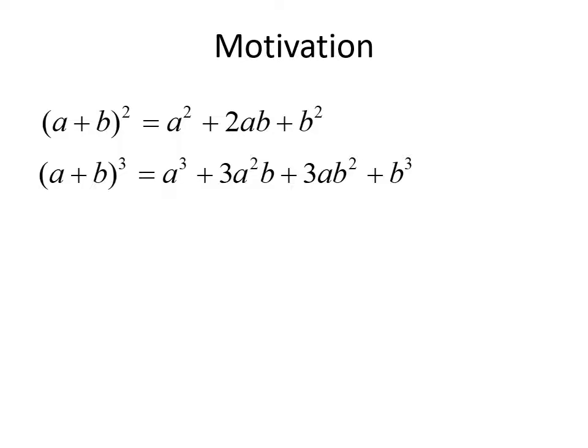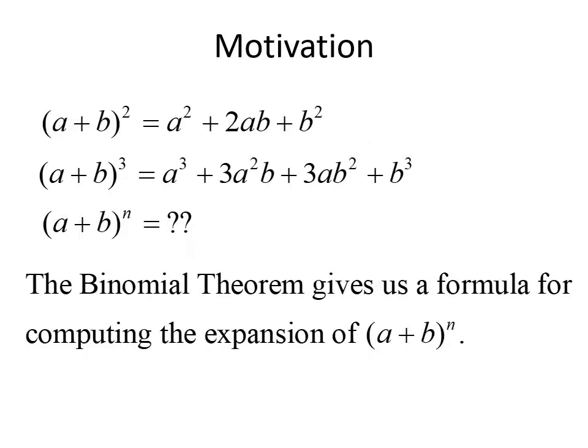Similarly, if we did (a + b) cubed, we could multiply (a + b) times (a + b) times (a + b), and when all is said and done we'd get a cubed plus 3a squared b plus 3ab squared plus b cubed. But as the power of (a + b) increases, it takes a lot longer to multiply these out by hand, and so we use what's called the binomial theorem. It gives us a formula that simplifies the way we can compute the expansion of (a + b) to the nth power.